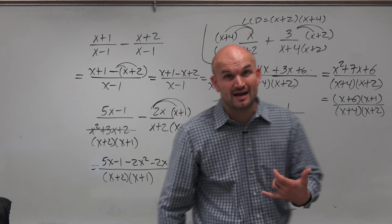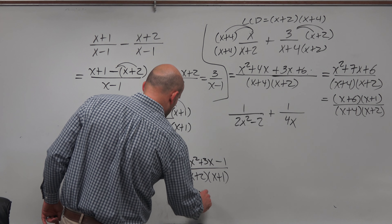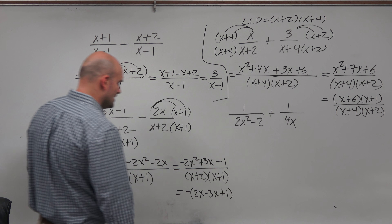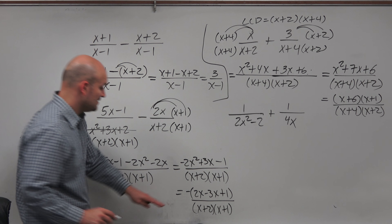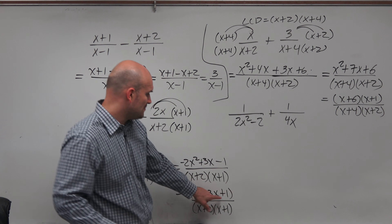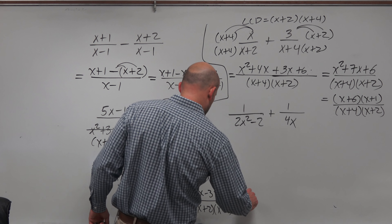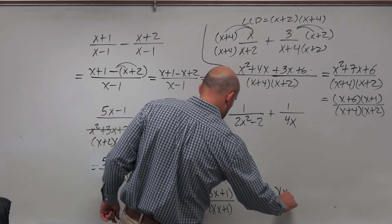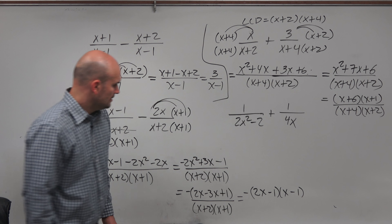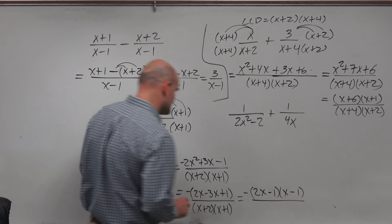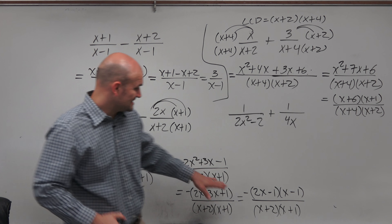Combining like terms: 5x minus 2x gives 3x, so the numerator becomes negative 2x squared plus 3x minus 1, all over (x plus 2)(x plus 1). Factoring out a negative gives negative(2x squared minus 3x plus 1). This does factor, but nothing cancels with the denominator (x plus 2)(x plus 1), so it does not simplify further.